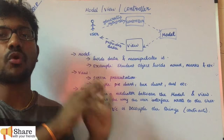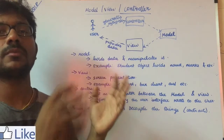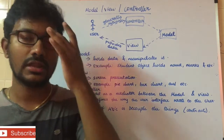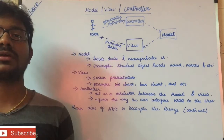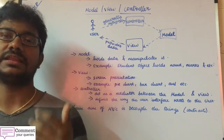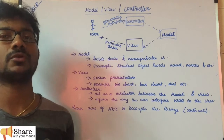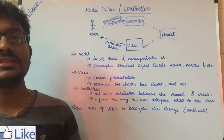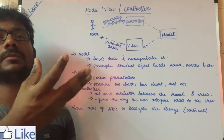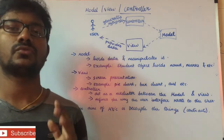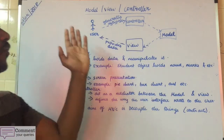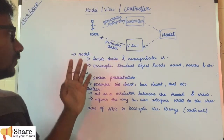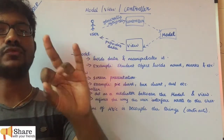If we have a class that has a problem, we can remove or replace that class. Suppose we have an algorithm that is outdated — if we have an advanced class, we can remove the old algorithm from each class. This is the main aim of Model View Controller.